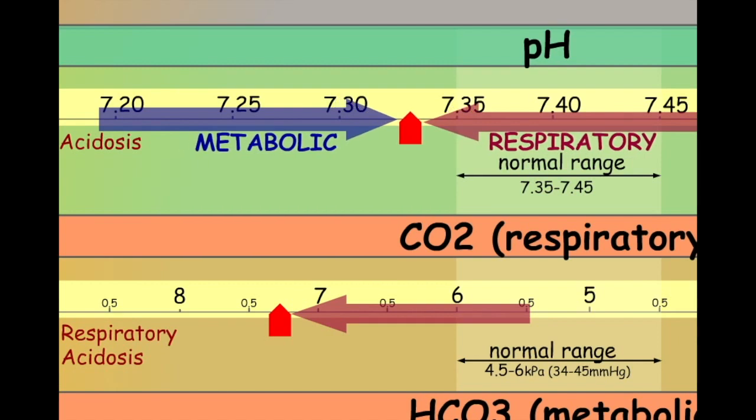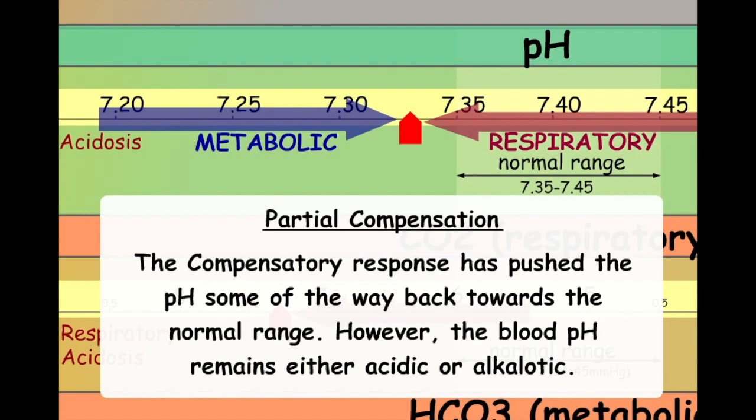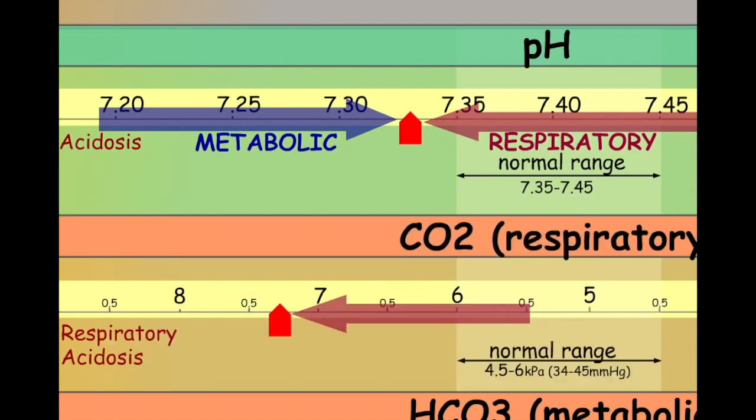Increased levels of bicarbonate will effectively push the metabolic system in an alkalotic direction. In this example, the kidneys have produced enough bicarb to push the acidosis some of the way back towards a neutral pH. We would therefore refer to this situation as a partially compensated respiratory acidosis, as the metabolic system has not fully pushed the pH all the way back to neutral.